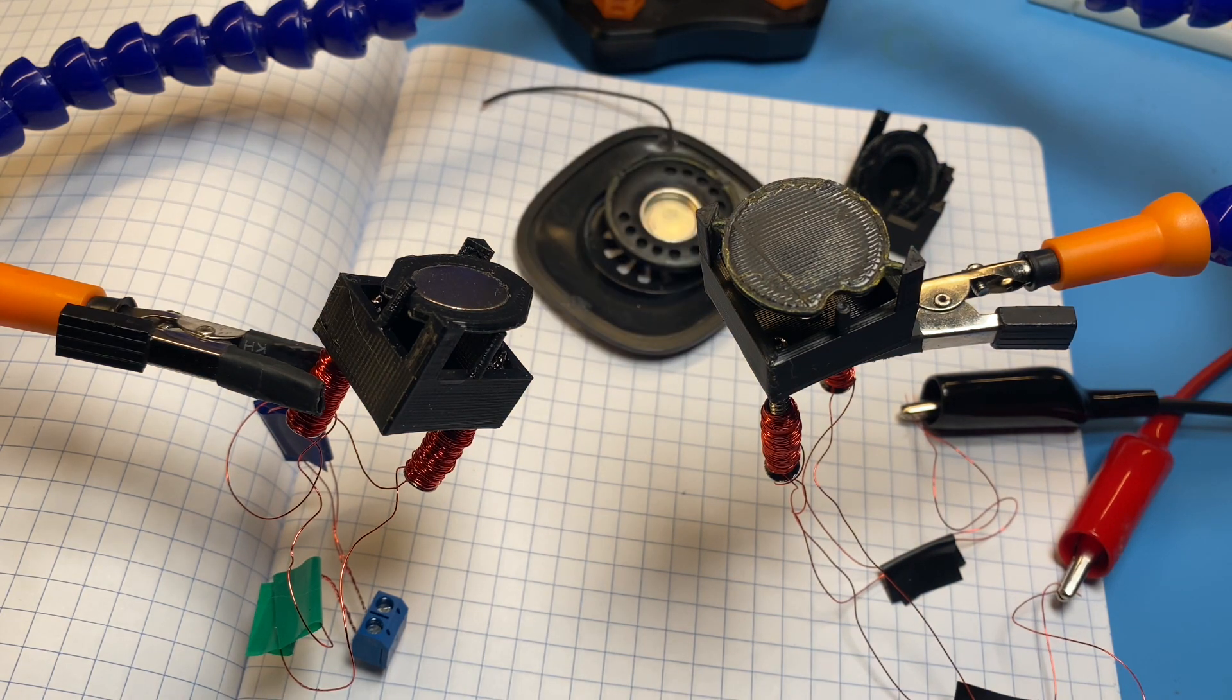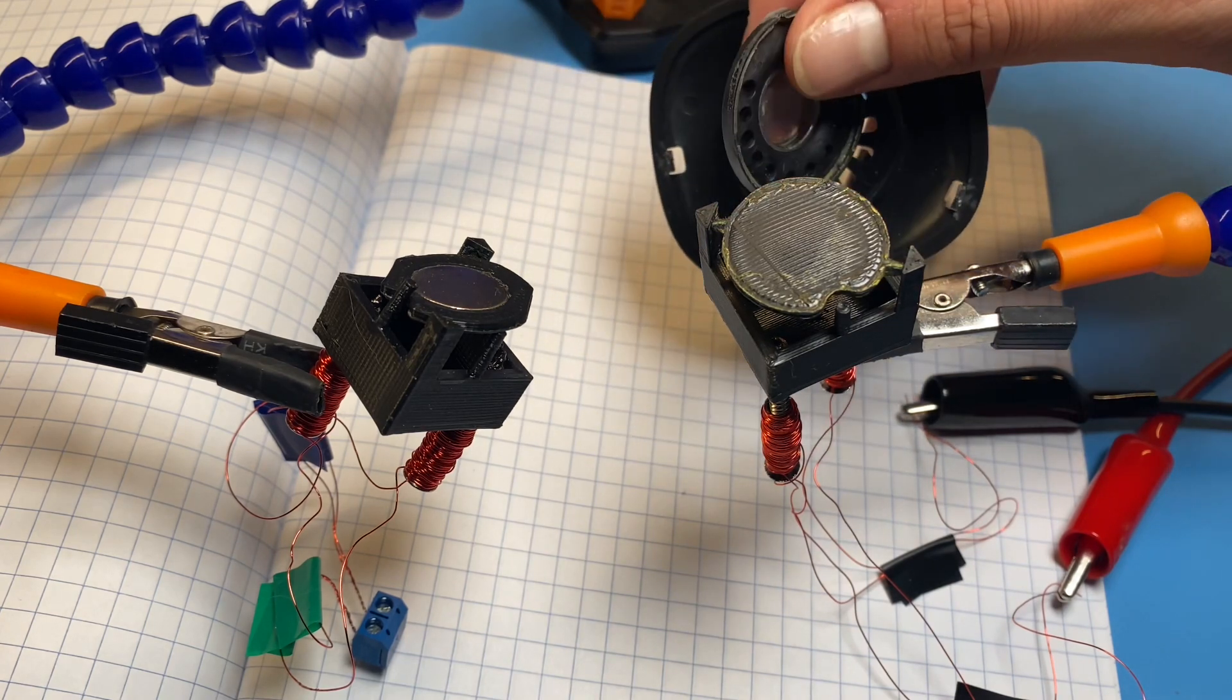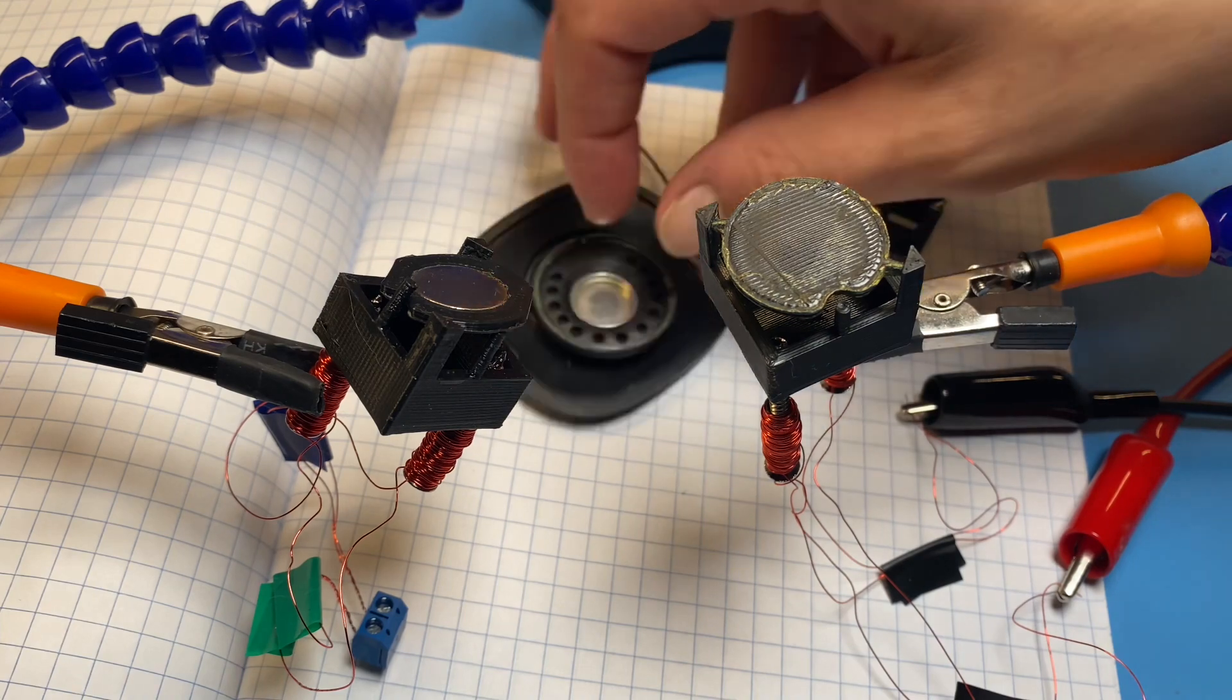So what you're looking at here are two of the first flip dot prototypes that I made. The one on the right was the original one I made one night when I decided to do this project, and I ripped open an old speaker and pulled out this small magnet.